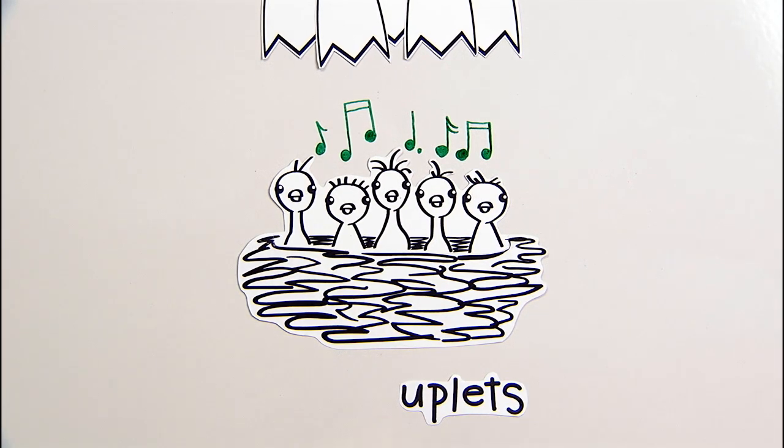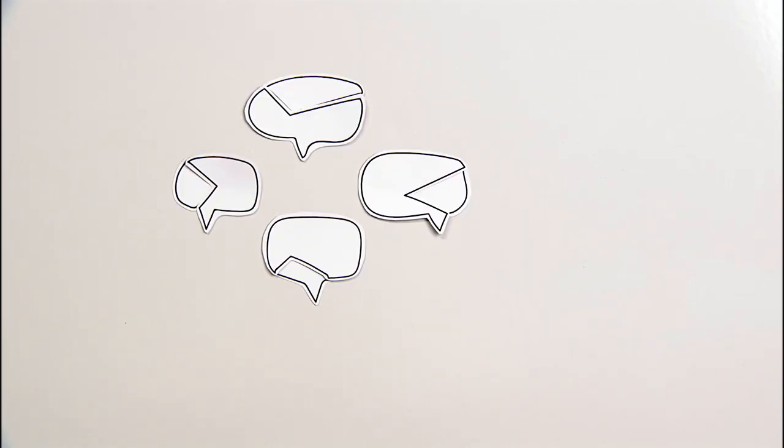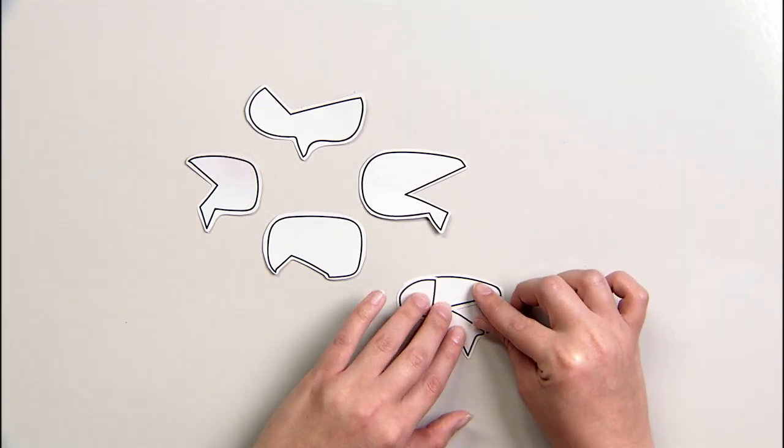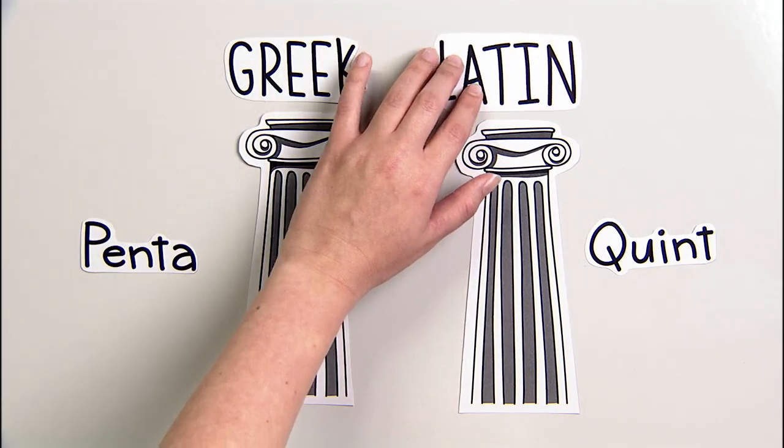Instead, we use the prefix quint. The terms are quintuplets and quintet. The differences in the prefixes are because English borrows words from multiple languages. Penta comes from Greek and quint comes from Latin.